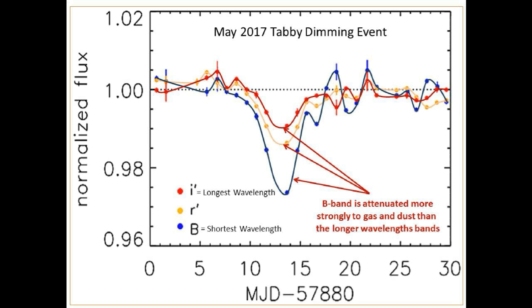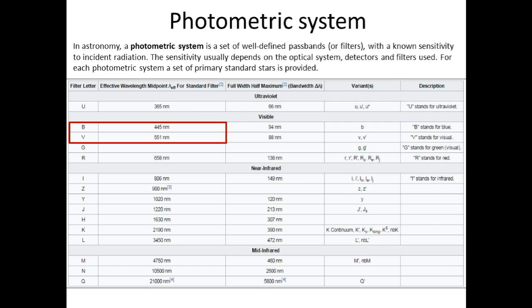We want to show you that different wavelengths of light are attenuated or decreased differently by the material that is blocking, absorbing, or scattering the light. If the material is totally solid, no light will penetrate regardless of its wavelength and there should be no differentiation between the light curves of the different filters. If the material is interstellar gas or dust, there will be a differentiation — the shorter wavelengths of light will attenuate more than the longer wavelengths, like what you see between the red curve and the blue curve in this graph.